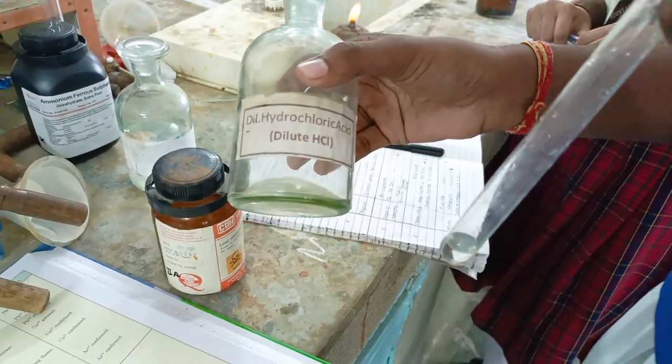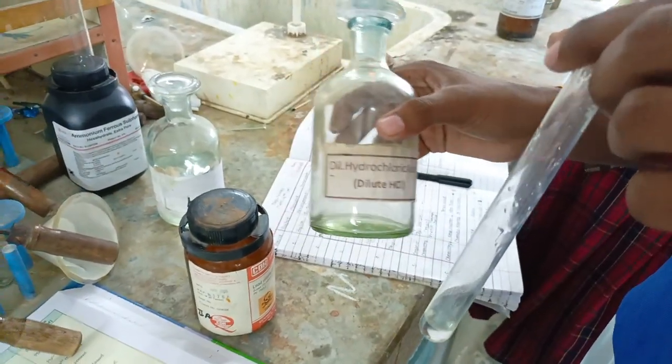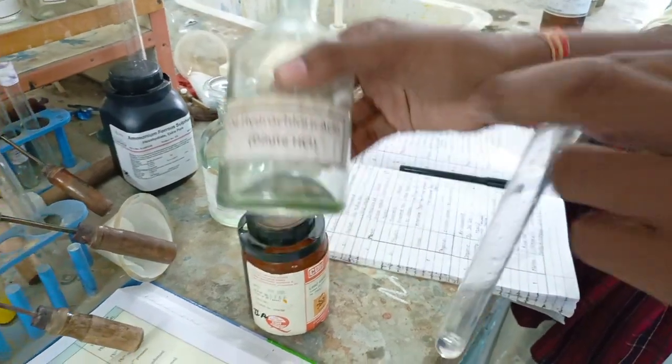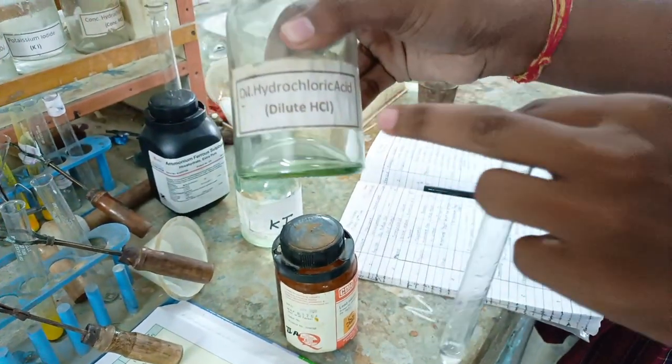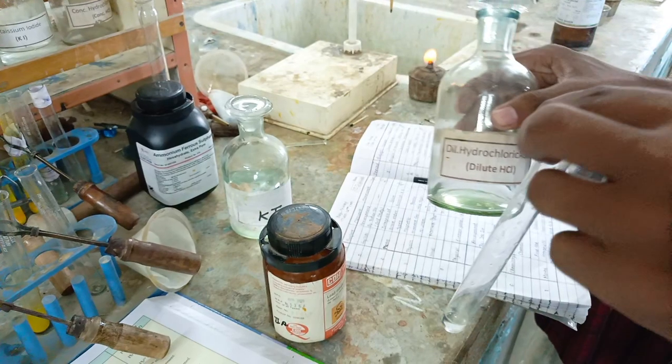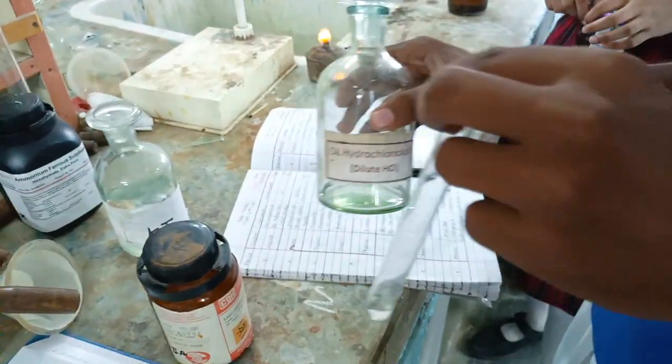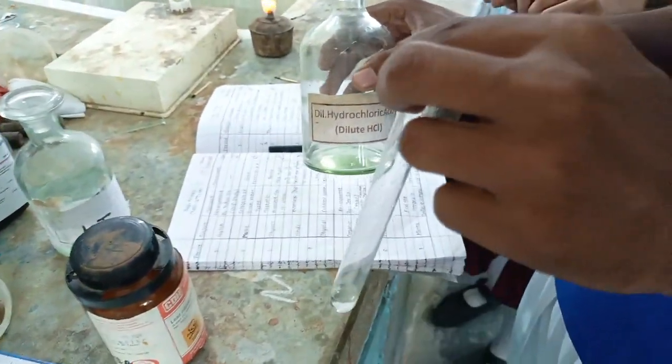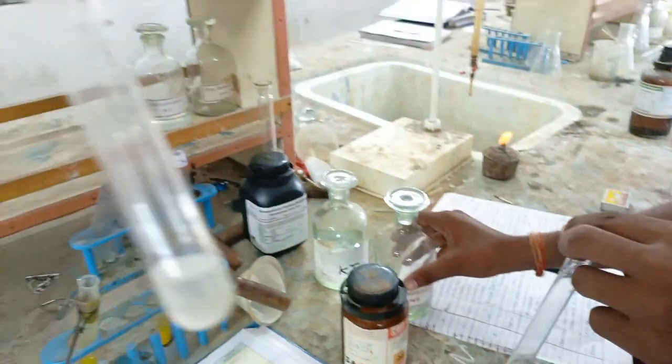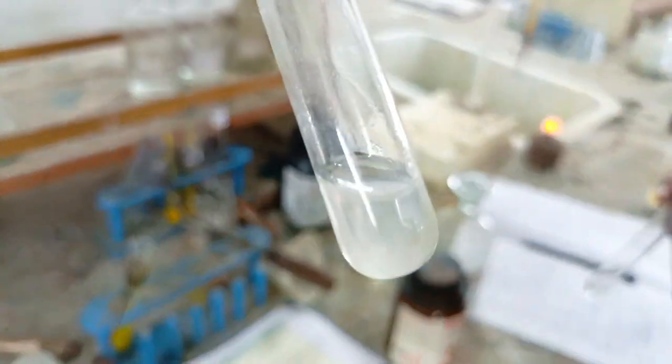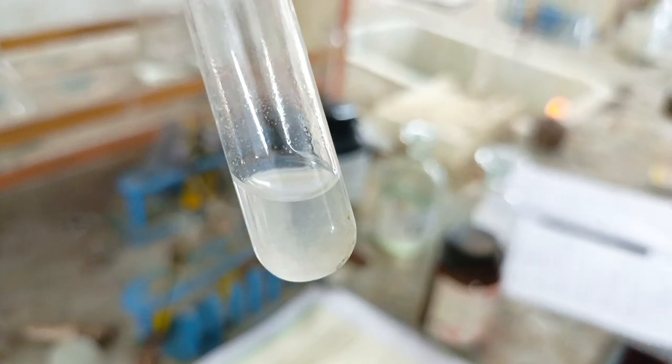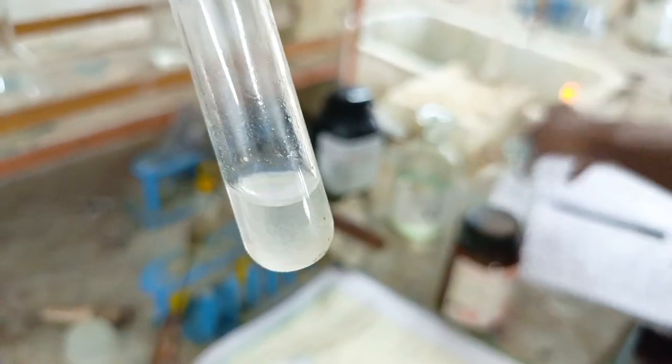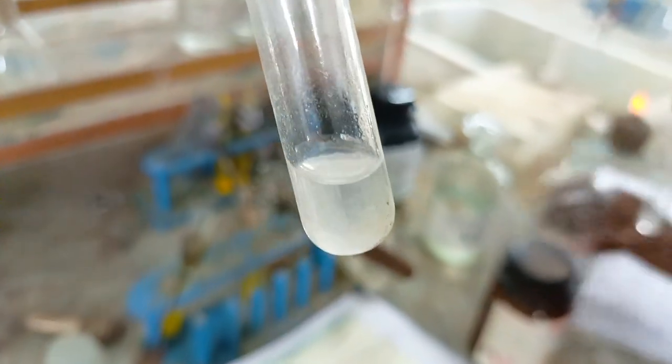Then wash the precipitate with water and add 10 ml of water and heat. After heating, it will form liquid again and the precipitate will dissolve. We will separate the dissolved precipitate into three different test tubes.